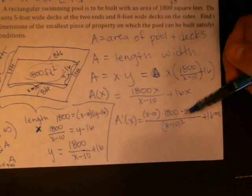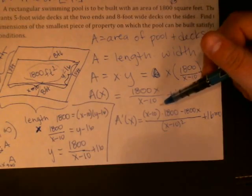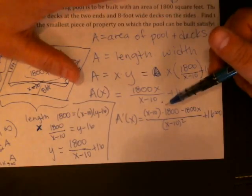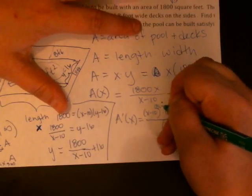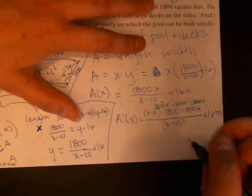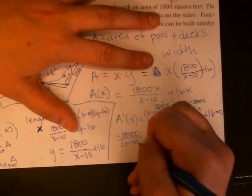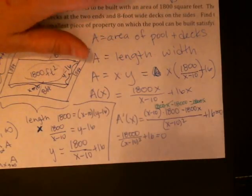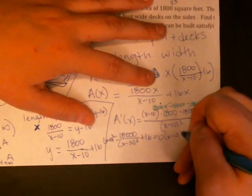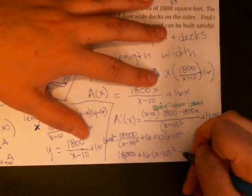So I'm going to set this equal to 0. As x approaches, or if x is 10, the derivative doesn't exist. But the original function also doesn't exist. So we're not going to find a maximum there. But we might want to check that out. And actually that's already on my list. So we're good. So let's see. I am seeing 1800x minus 18,000 minus 1800x. So the 1800x's go away. And I really just have, is it negative? Yes. Negative 18,000 over x minus 10 squared plus 16 equals 0. And if we multiply both sides of that by x minus 10 squared, we're going to get negative 18,000 plus 16 times x minus 10 squared equals 0.